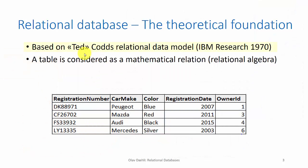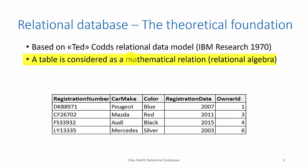The theoretical foundation of the relational model was developed by Ted Codd in 1970. He was an IBM researcher. In this model a table is considered as a mathematical relation. If a database follows all the rules of the mathematical relational theory, it is said to be a relational database.